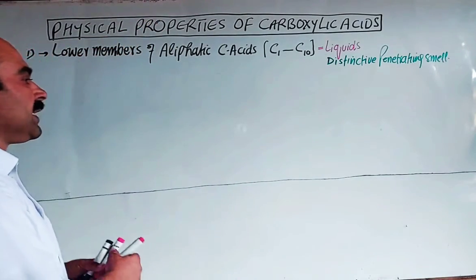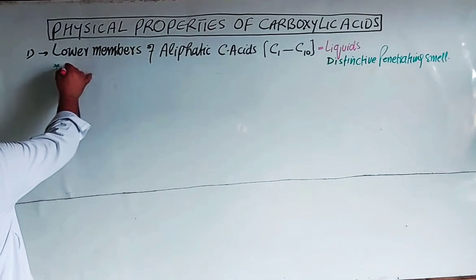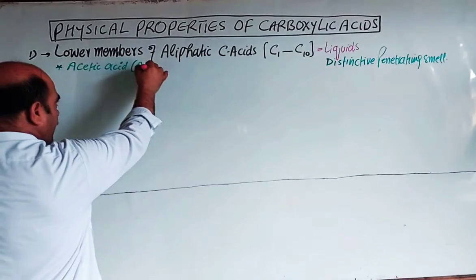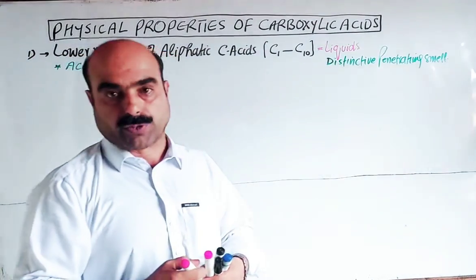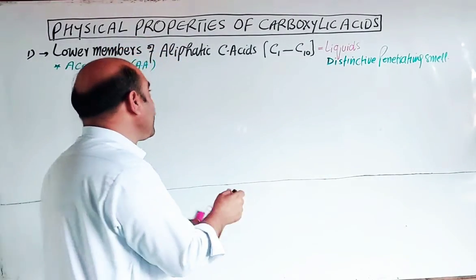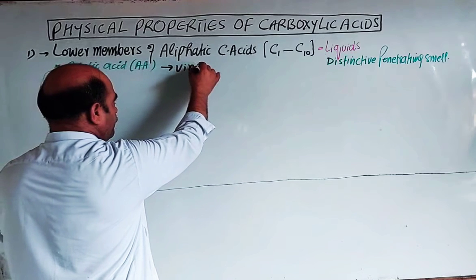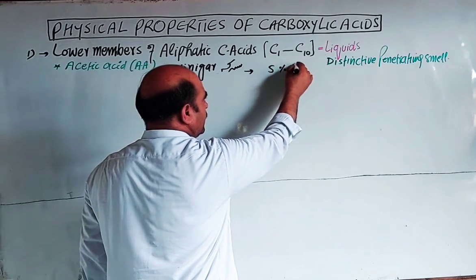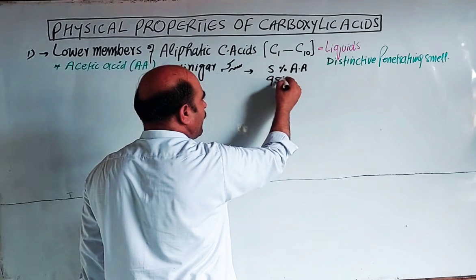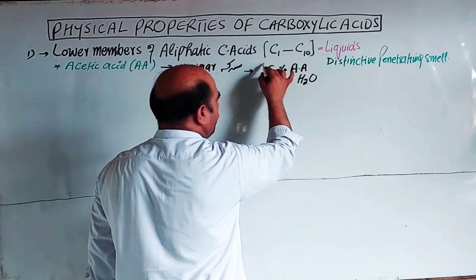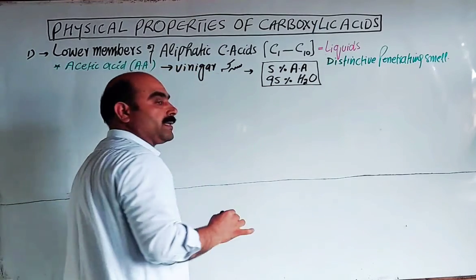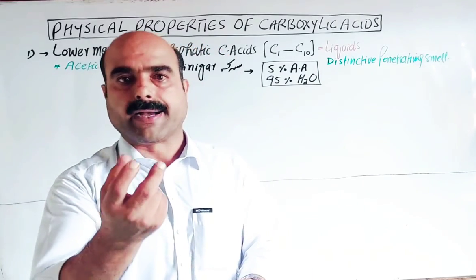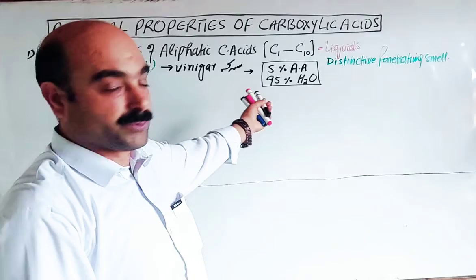For example, acetic acid has a strong distinctive smell. Vinegar is basically 5% acetic acid and 95% water. Because it is volatile, lower carboxylic acids can be smelled easily. Formic acid is also in liquid form with a strong smell.